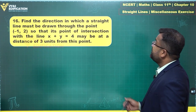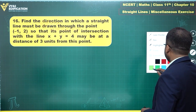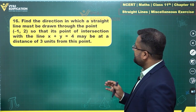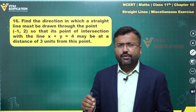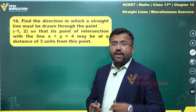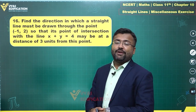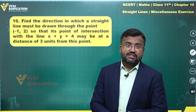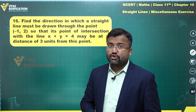Question number 16 says: find the direction in which a straight line must be drawn through the point (-1, 2) so that its point of intersection with the line x + y = 4 may be at a distance of 3 units from this point. If you have studied the parametric form of equation of a line you would think of that method, but the NCERT approach just uses slope.